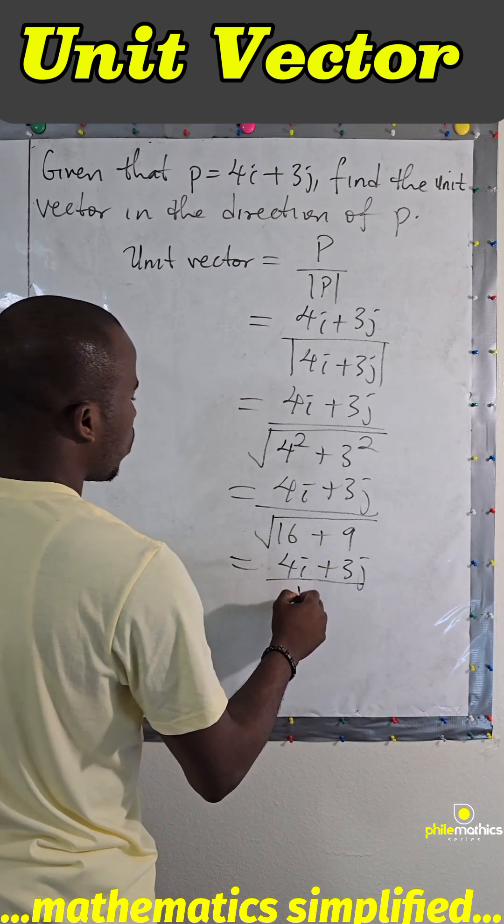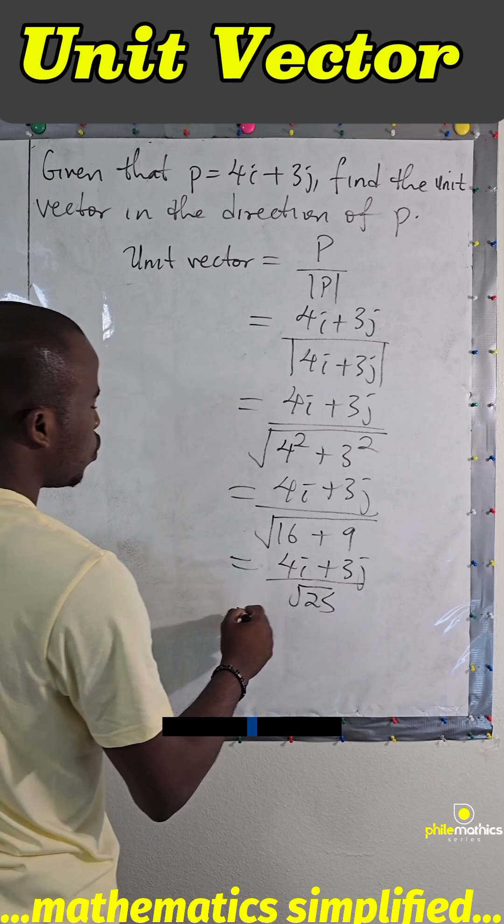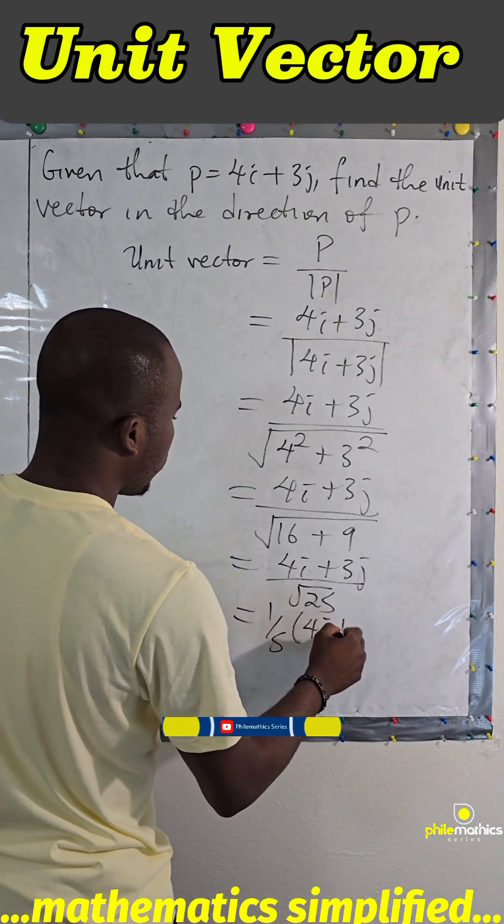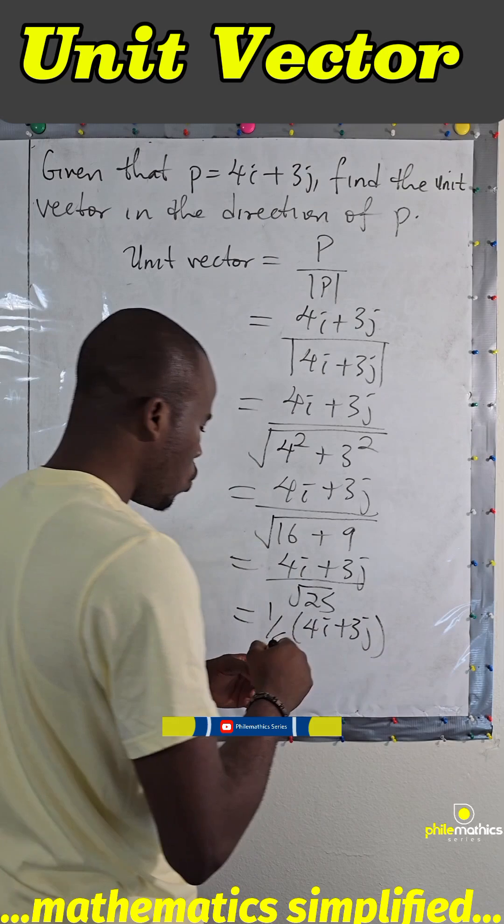This is 4i plus 3j by square root of 25. So the unit vector will be 1 over 5 times (4i plus 3j).